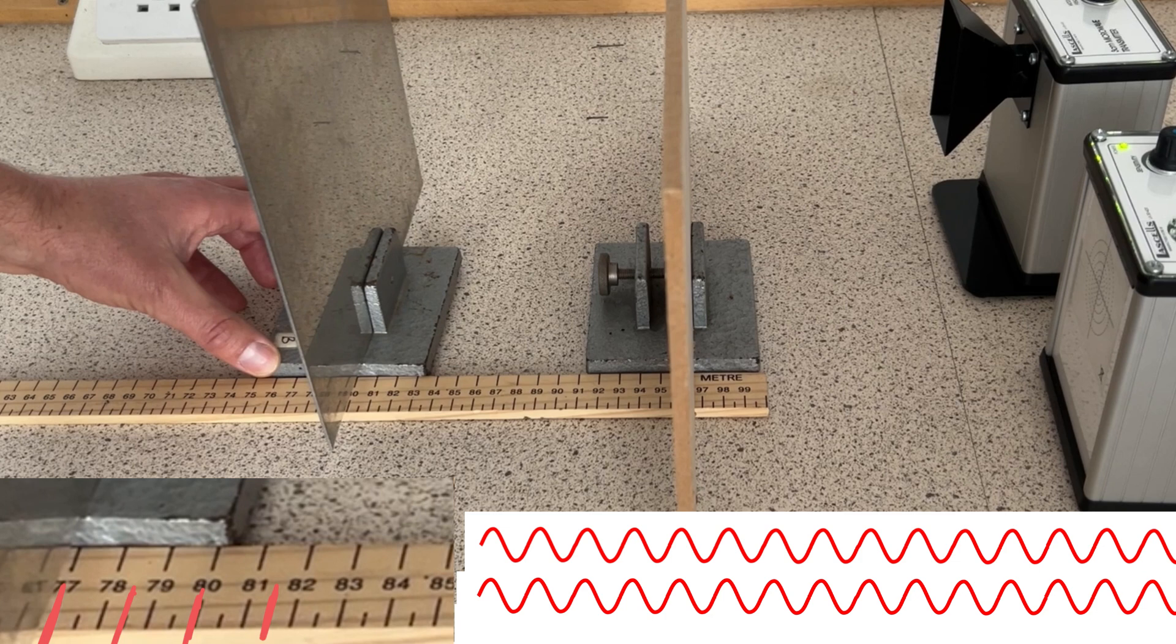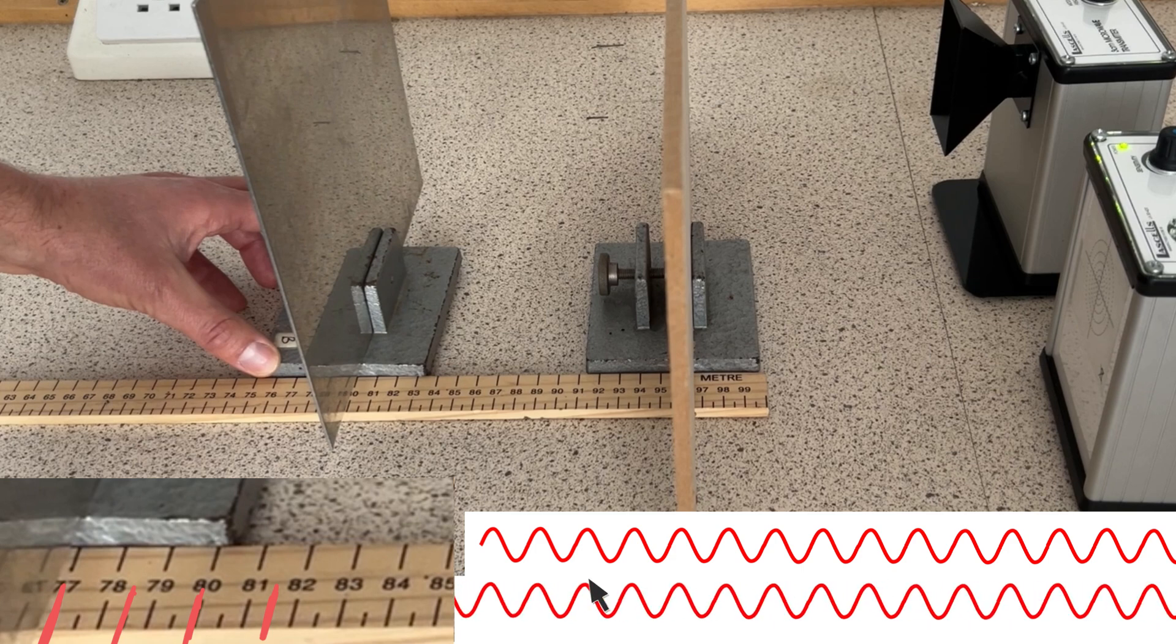And when it has to travel an integer number of wavelengths further, then the wave that's reflected from the metal sheet will be delayed by an integer number of wavelengths.